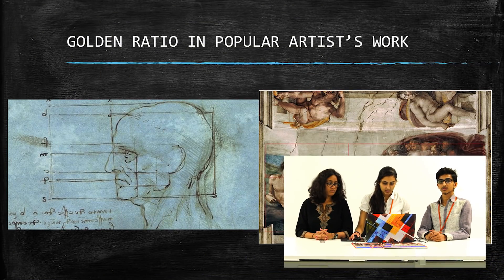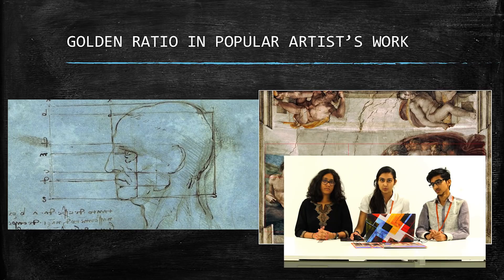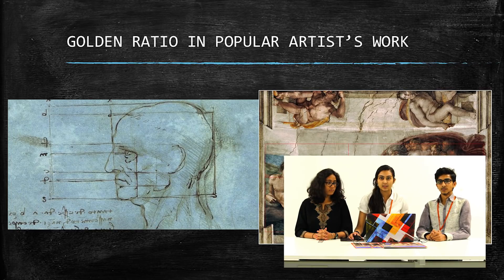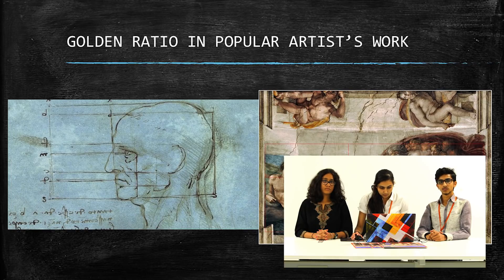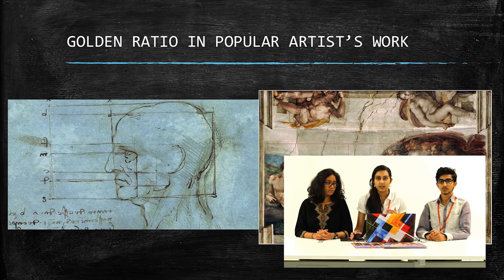I am going to demonstrate how some popular artists use the Golden Ratio in their works. This is a painting by Michelangelo. He used the Golden Ratio, which is basically a ratio of two numbers equivalent to 1.618, derived from the Fibonacci series: 1, 1, 2, 3, and so on. He used the Golden Ratio to present his work in a way that feels very attractive to the observer.